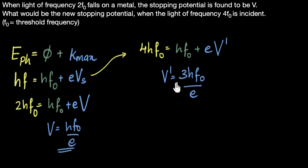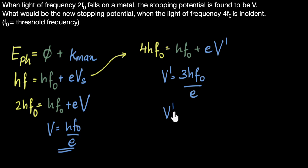Now I can look at these two equations and directly say: HF₀ over E is V, so V' becomes three times that. V' equals 3V. That's our answer.